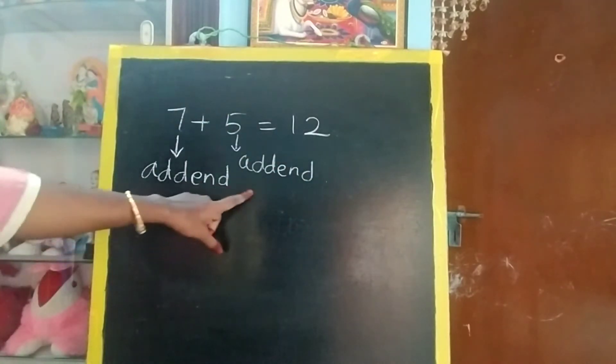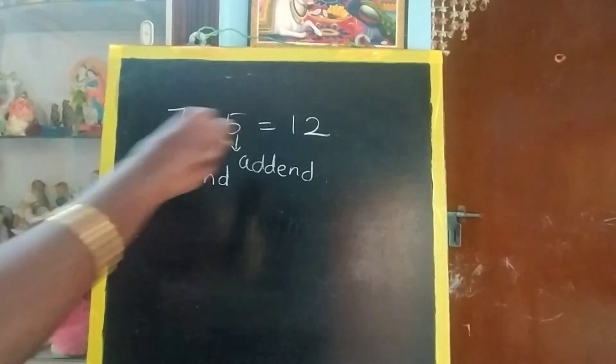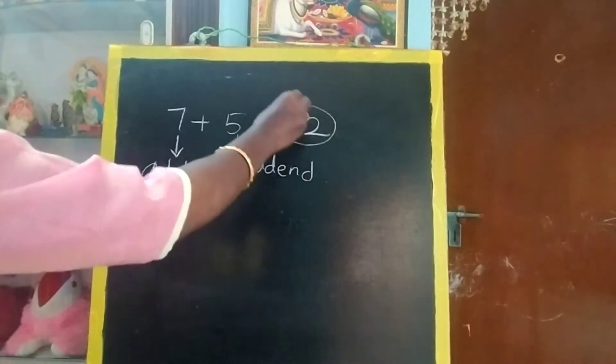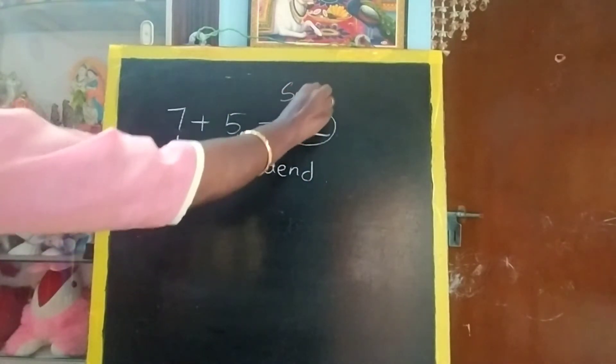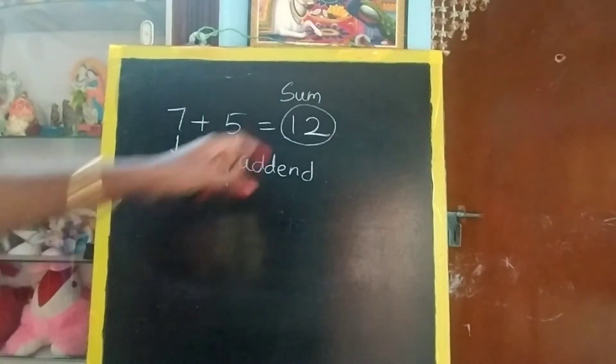Okay, so addend. How many addends are there? Two addends we are adding. So the answer we are getting now, this is called as sum. S-U-M. We will say even sum 1, sum 2, that also same, this also same.